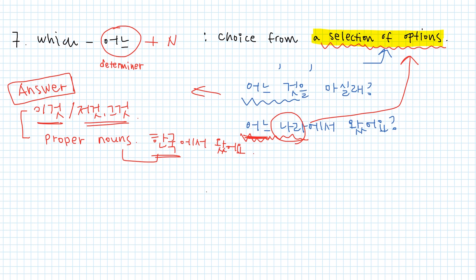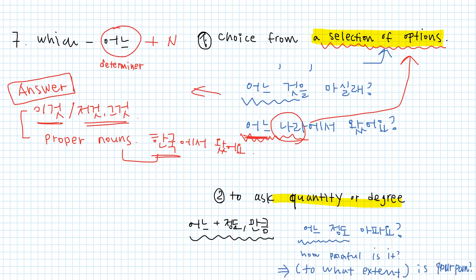And 어느 can be used to ask quantity or degree. In this case, 정도 or 만큼 should be followed after 어느. For example, let's say I have a headache. So I went to see a doctor. And then the doctor would ask me, 어느 정도 아파요? It means, how painful is it? So to what extent is your pain?